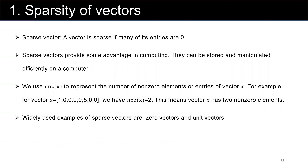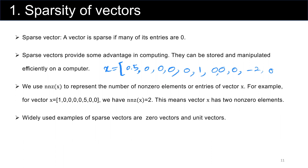Sparsity of vectors. A sparse vector is a vector where most of its entries are 0. Sparse vectors provide advantages in computing — they can be stored and manipulated efficiently. For example, vector x equals (0, 0, 0, 0, 0, 0, 1, 0, 0, 0, 0, minus 2, 0, 0, 0) is a sparse vector. We use the notation NNZ to represent the number of non-zero elements of vector x. For this vector x, NNZ equals 2 — it has two non-zero elements.